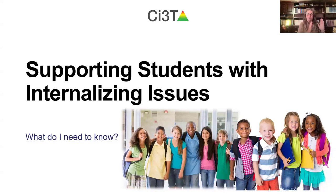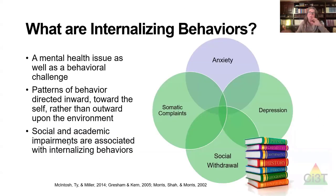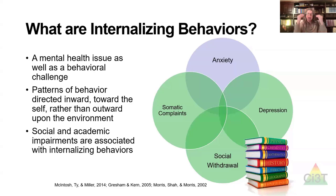Now we're going to shift gears and think about kids with internalizing issues. We can't bucket kids to say you either have just externalizing or just internalizing. When we think about those co-occurring behavior challenges, often kids experience both. What often shows up is the acting out behavior, but many kids also have co-occurring internalizing issues. We can think about these as being really over-controlled behaviors — things like somatic complaints and feeling anxious.